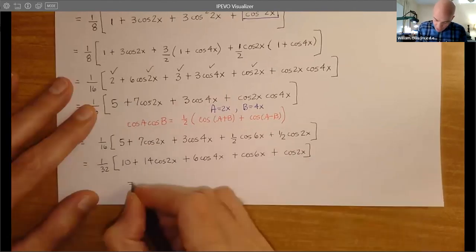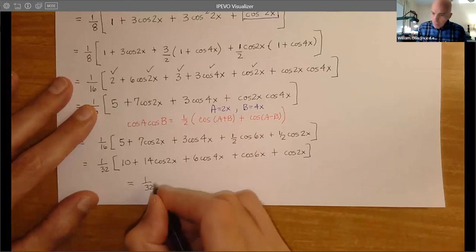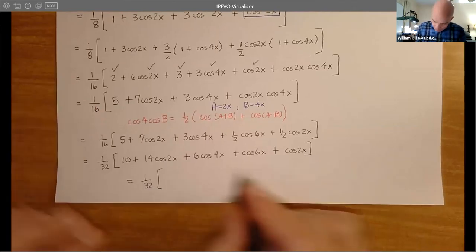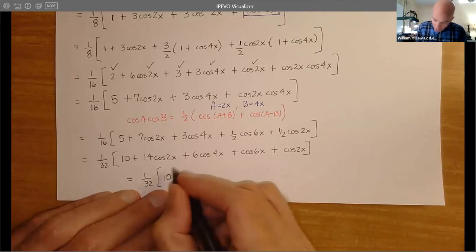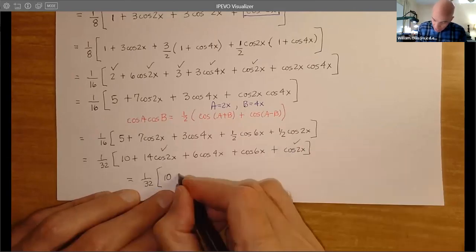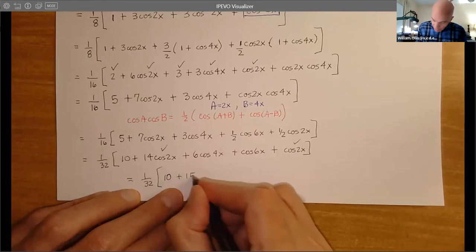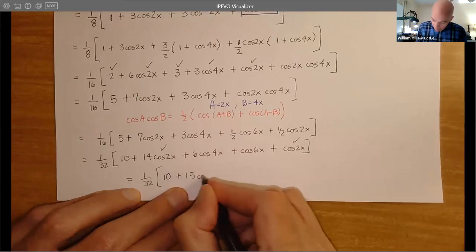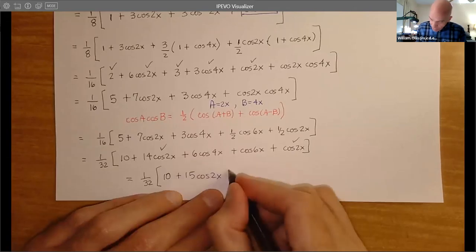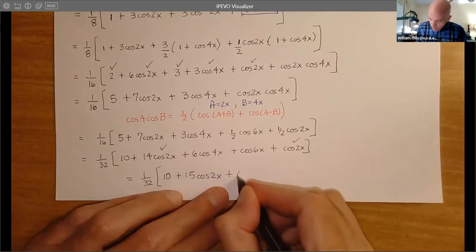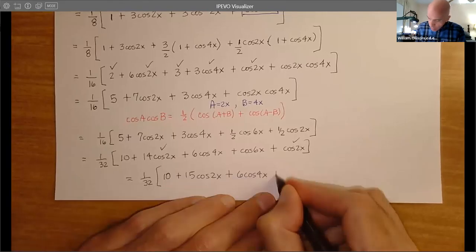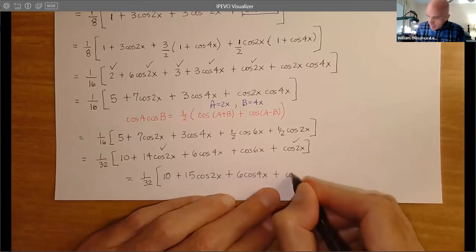Hit that with a 2: 10 + 14cos(2x) + 6cos(4x) + cos(6x) + cos(2x). Now let's combine everything. We've got 10, and we've got an extra copy of cos(2x), so that gives us 15cos(2x), then 6cos(4x), and cos(6x).